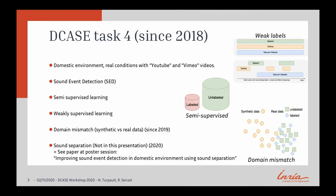With Romain, we are organizers of DCASE Task 4 since 2018. This task is in a domestic environment, and we try to match real conditions with YouTube and Vimeo videos. The goal is sound event detection. We have to use semi-supervised learning because we have only a small amount of labeled data, but we can gather a lot of videos on the internet so we have a lot of unlabeled data. We have weakly supervised learning because the labels we have are at clip level, not at frame level. We have a domain mismatch because we introduced since 2019 synthetic data, which is strongly labeled — the inconvenience being that it is not exactly in the same domain as the real data, so we have to do some kind of adaptation.